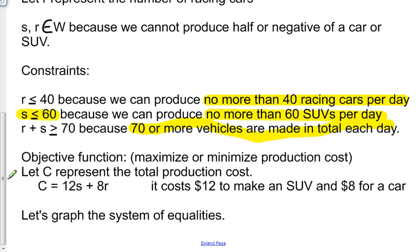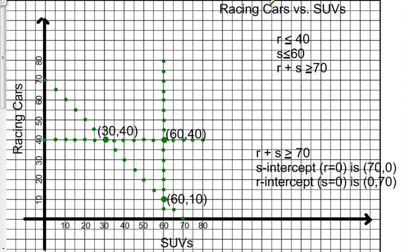Let's graph the system of inequalities to see what our solution set is going to be. Racing cars versus SUVs. So my first inequality was R is less than or equal to 40. So I'm going to shade that area with a highlighter. So here's my solution set region for R is less than or equal to 40. Racing cars are 40. Here's my dotted line going across. Here's my region.